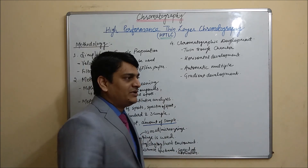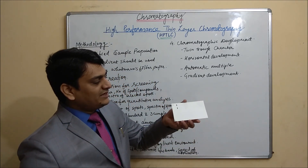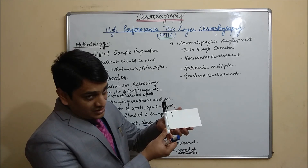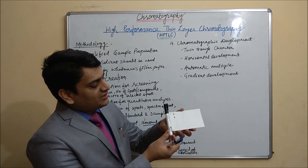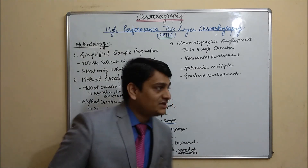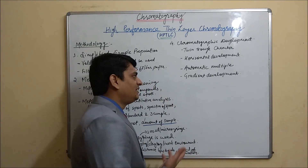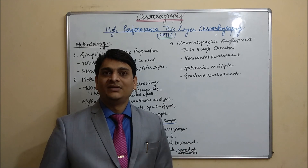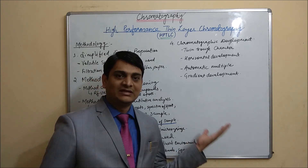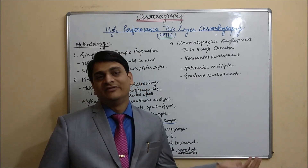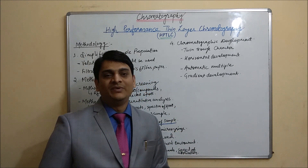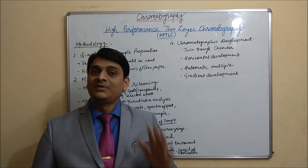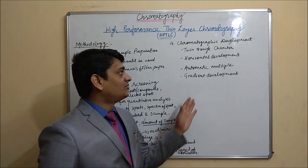The second development technique is horizontal development, where the plate is placed horizontally with a wick, and solvent runs horizontally. The third is automatic multiple development, where commands are given to a computer which selects the solvent system and ratio automatically. The fourth is gradient development, where the ratio of the solvent system is changed during development.